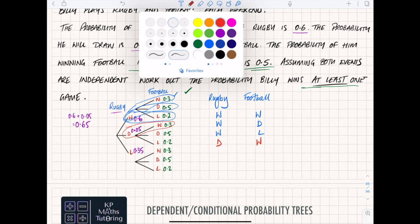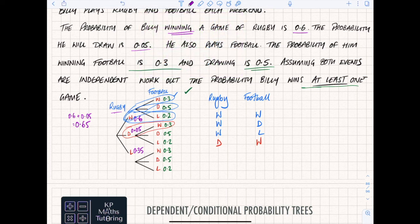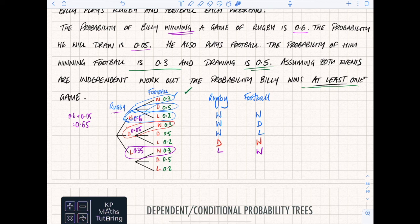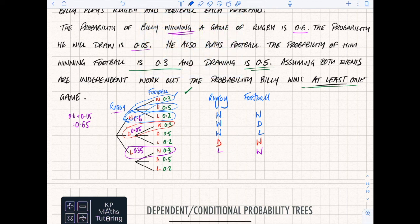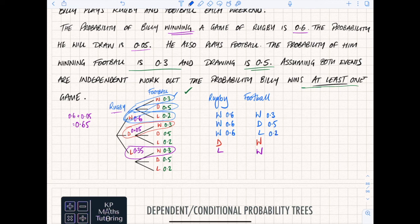The last branch: if I lose the first game, to win at least once I would have to then win football. Loss-draw is not winning one game, loss-loss is not winning one game. So I've got five routes in total. Let me fill in the probabilities: win rugby 0.6, win football 0.3; win rugby 0.6, draw football 0.5; win rugby 0.6, lose football 0.2.